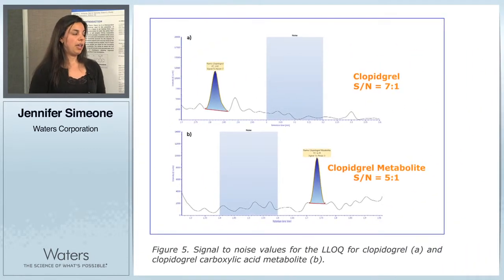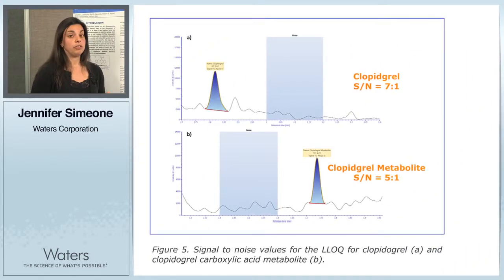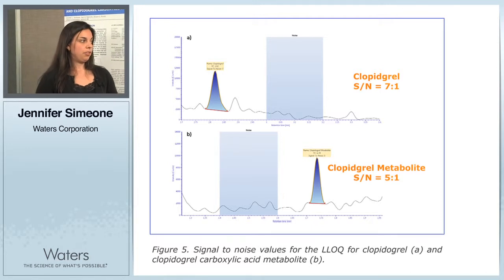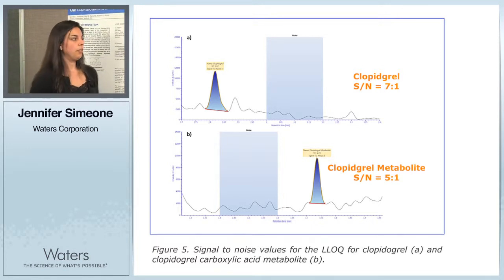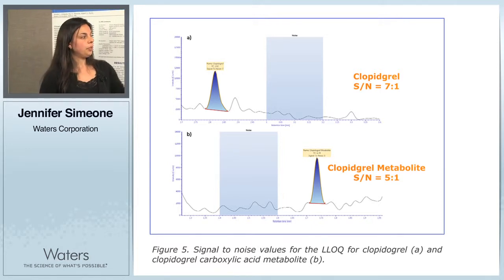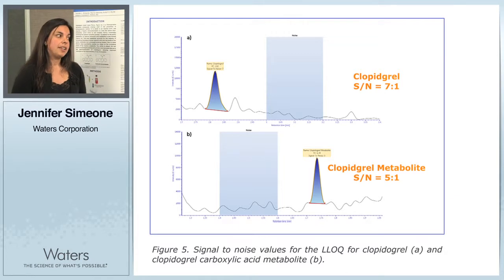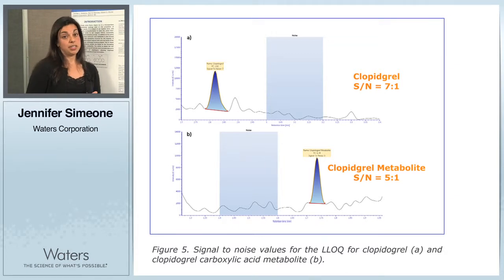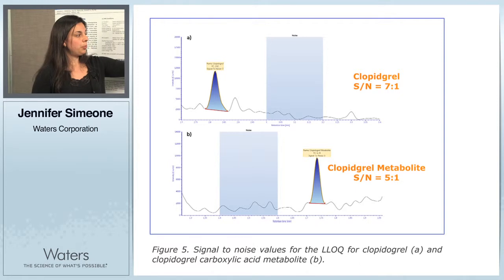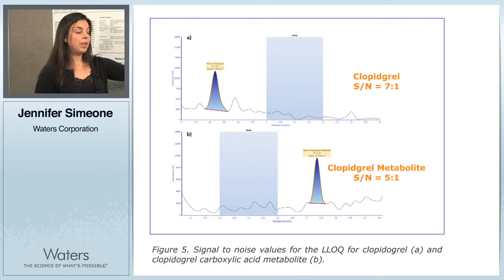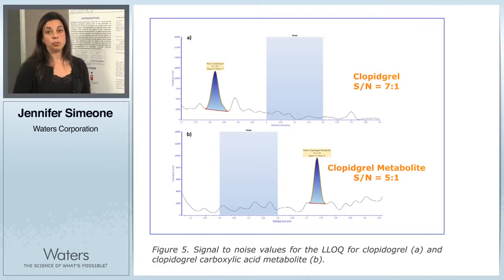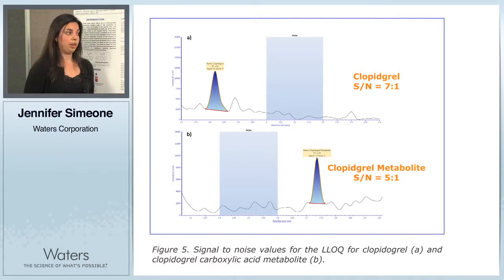In order for a method to be utilized under regulated situations, it has to meet certain criteria, one of which is carryover. Another is that your lowest standard has to produce a signal-to-noise of at least 5 to 1. This figure shows the signal-to-noise calculated for both Clopidogrel and its metabolite, and for both the signal-to-noise is 7 to 1, which meets the criteria.